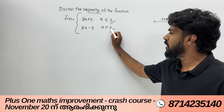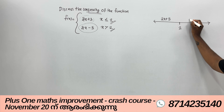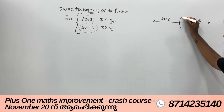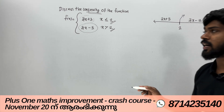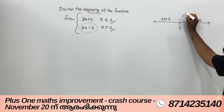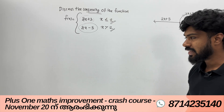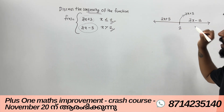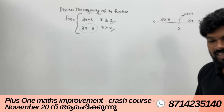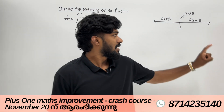If x is greater than 2, the function is 2x minus 3. So when x equals 2, we compare 2x plus 3 and 2x minus 3. This function is discontinuous at this point.